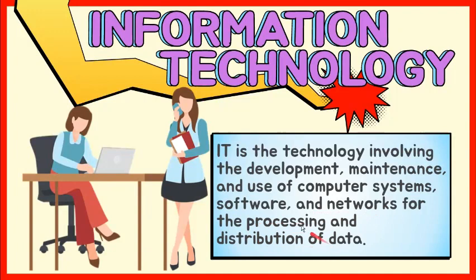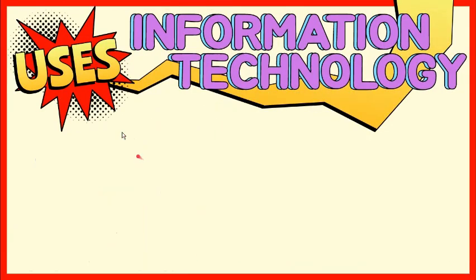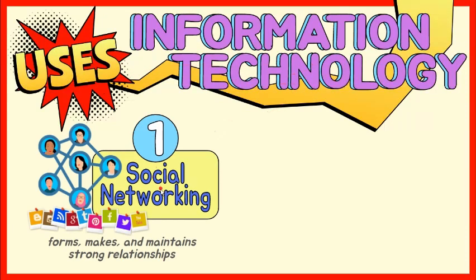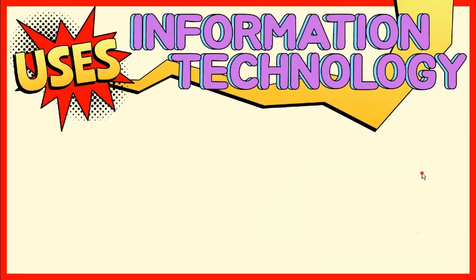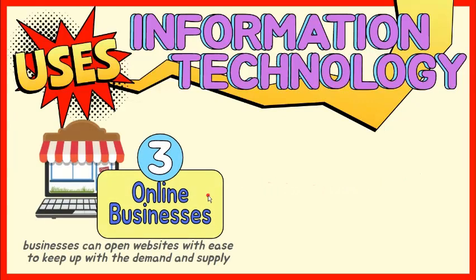Nowadays, it's hard to find a home or business that doesn't at least partially rely on computers and the networks that connect them. Let's take a look at some of the common uses of information technology. Social media sites bring society together — it forms, makes, and maintains strong relationships. Software is being used to ensure the smooth running of different departments and organizations, and it is used to get jobs done faster and easier. More customers are demanding faster access to their purchased items, and online business platforms have been created to help in keeping up with the demand and supply.